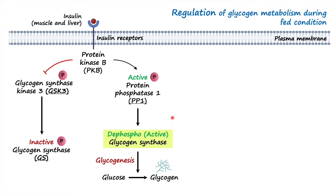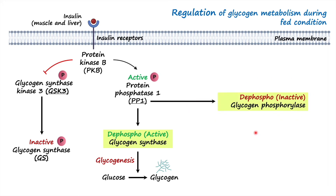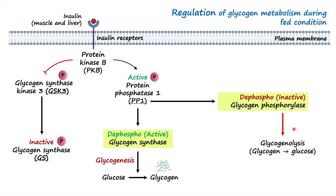Protein phosphatase 1 not only dephosphorylates glycogen synthase, but it also dephosphorylates glycogen phosphorylase, the rate-limiting enzyme for glycogenolysis. When glycogen phosphorylase is dephosphorylated it is inactive, so glycogenolysis is inhibited. You can see that these two enzymes are never activated at the same time — when glycogenesis is upregulated, glycogenolysis is inhibited.